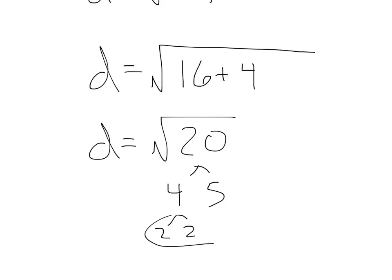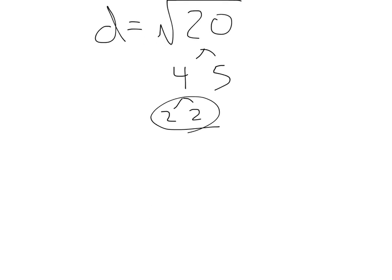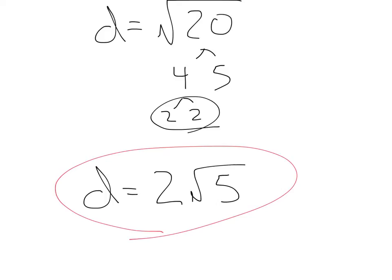20 can break down into 4 times 5, 2 times 2. We get a pair of 2s that we can pull out. So, our overall distance is going to equal 2 square root of 5, because we have this 4 or 2 squared that we can pull out, and 5 left over. So, our distance is 2 square root of 5.